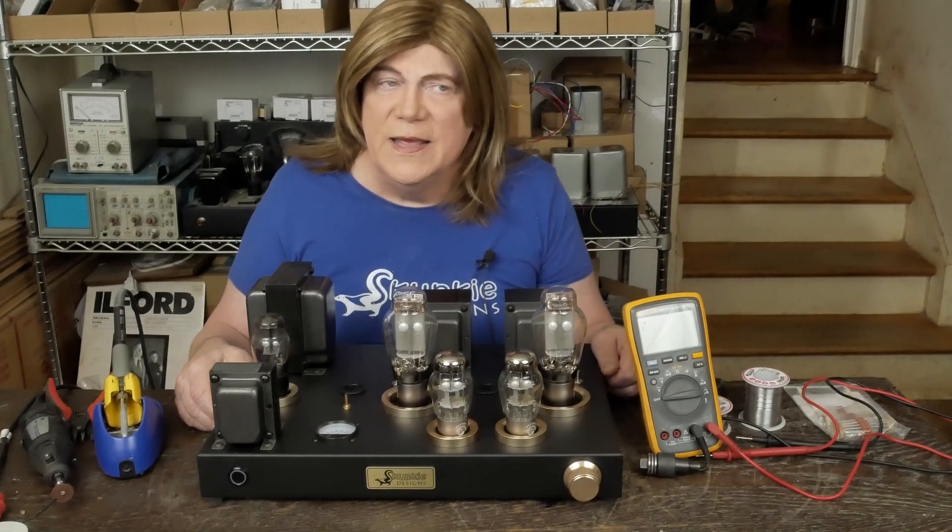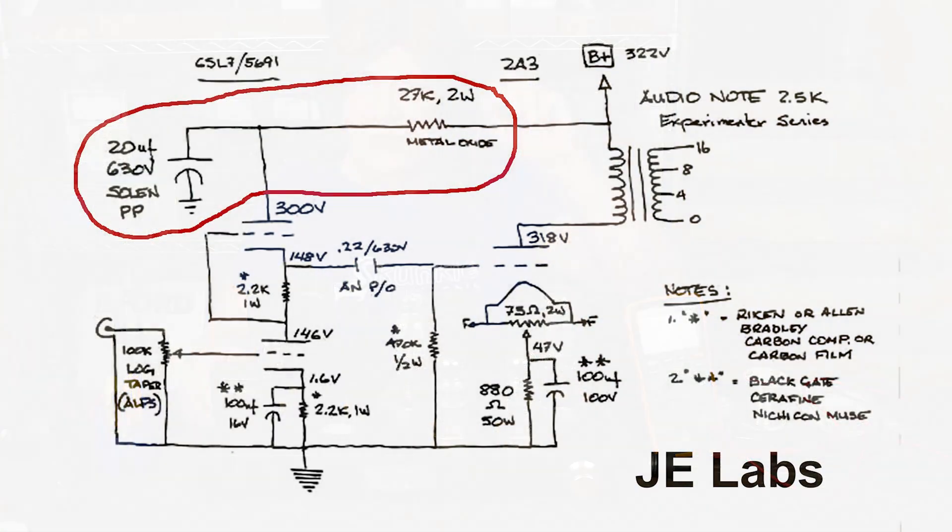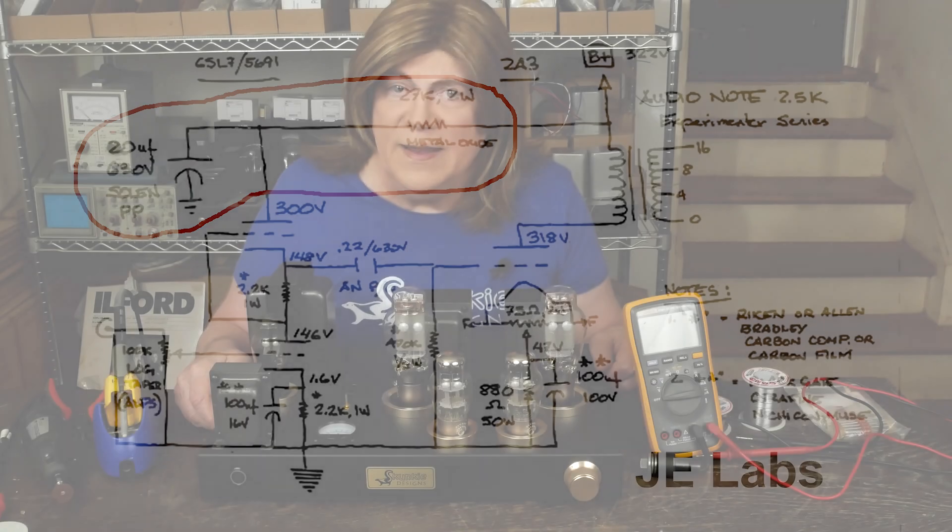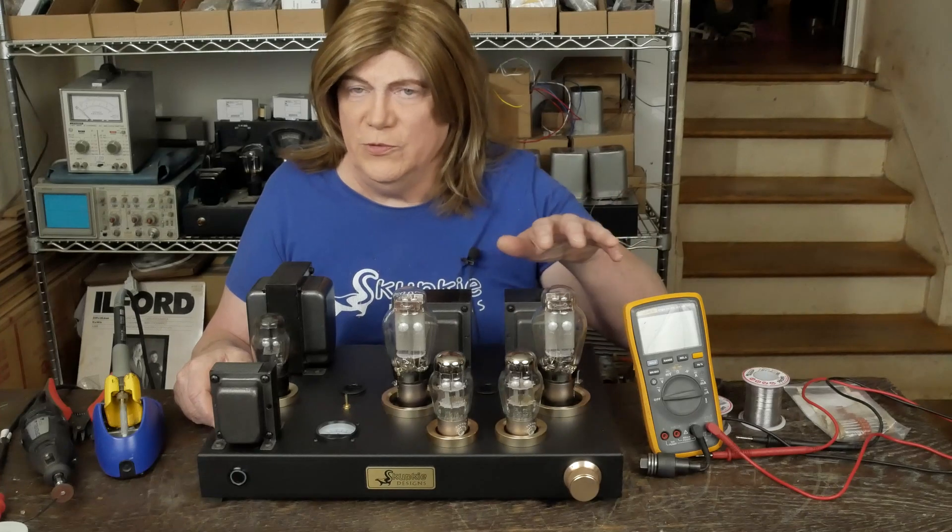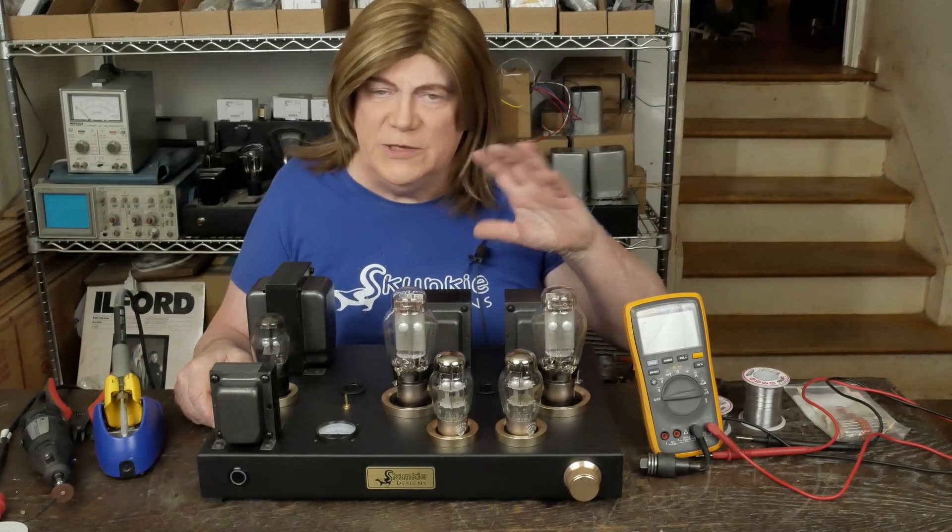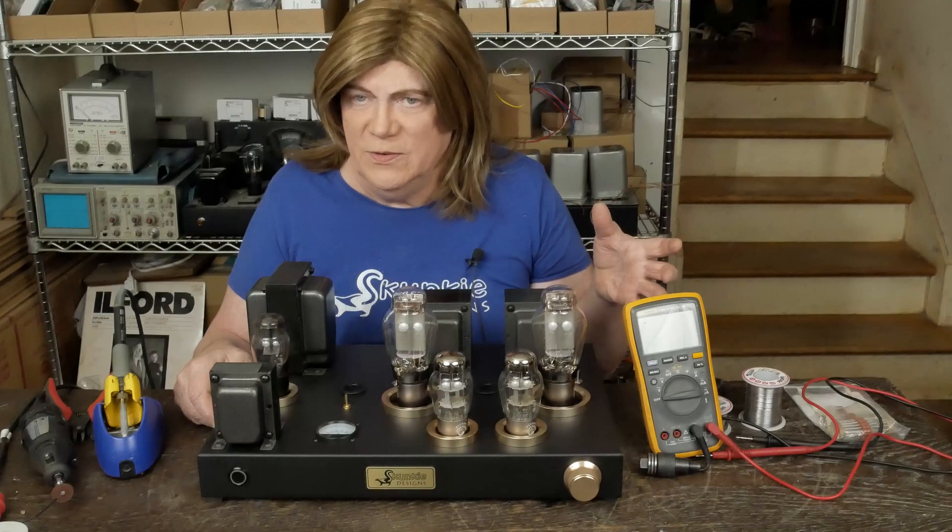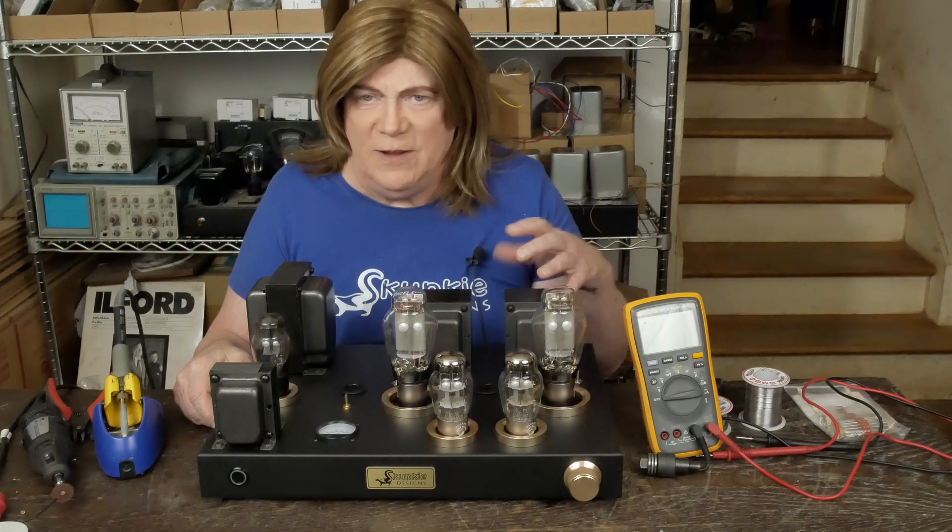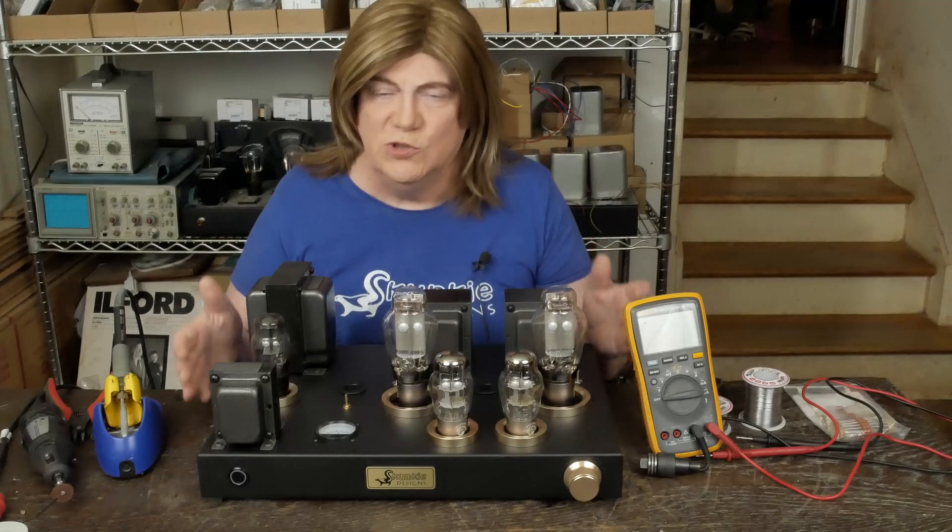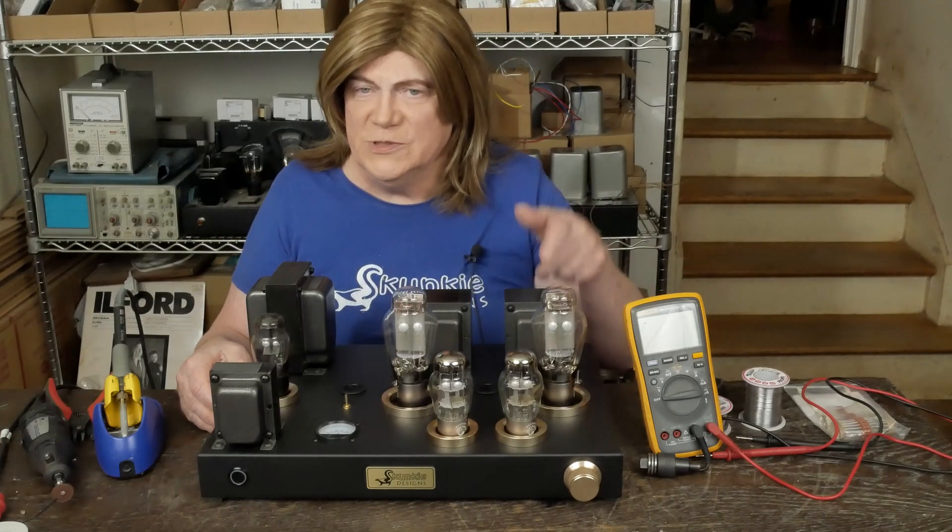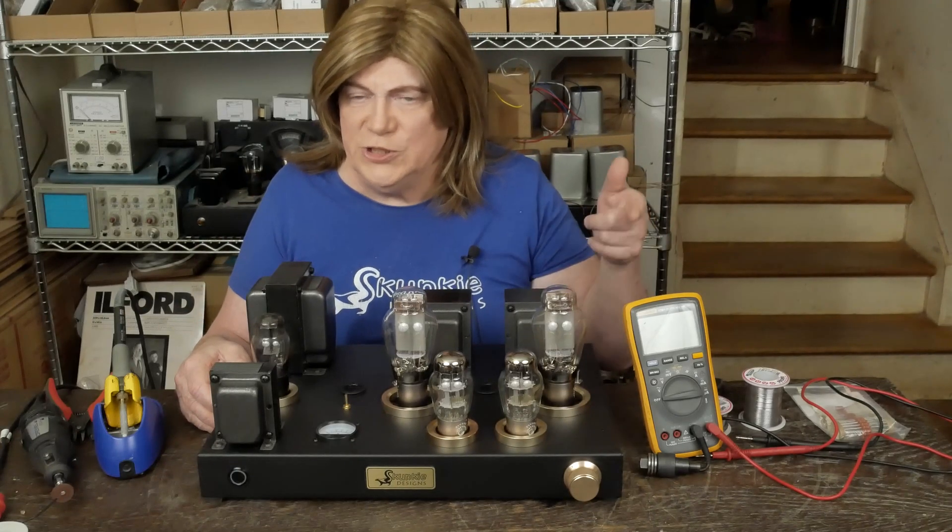On the schematic it's showing the RC decoupling, like resistor-cap network. A lot of people just use one resistor-cap for both tubes, and even when they draw it like it's one channel, it's meant to power both channels. I'm not sure which way this was drawn.